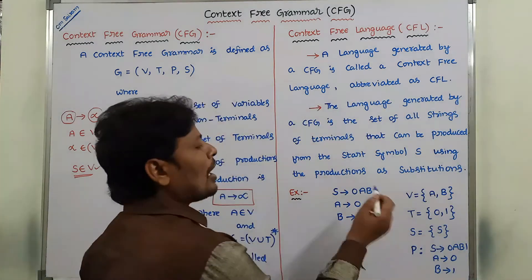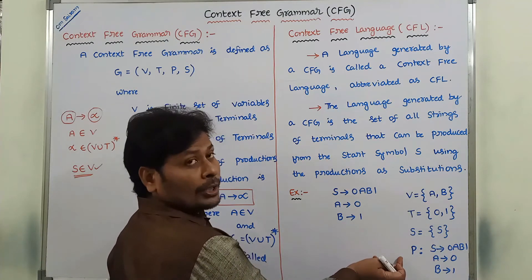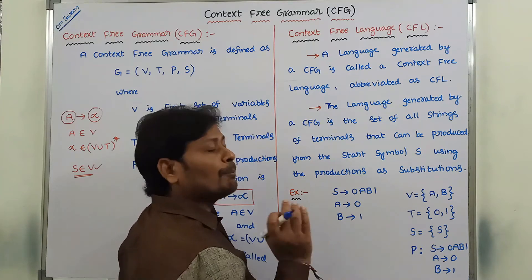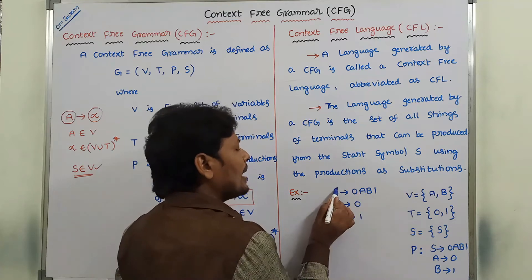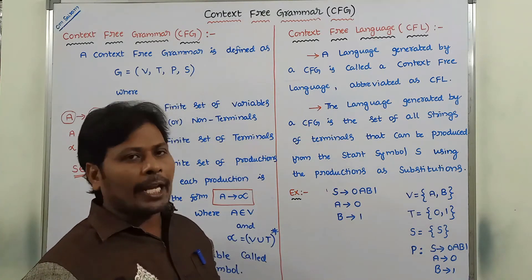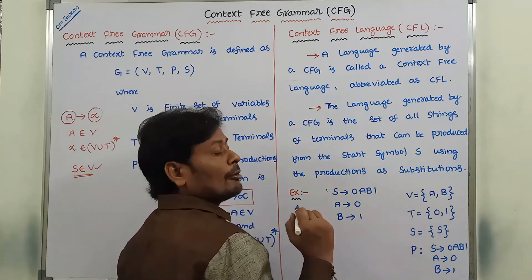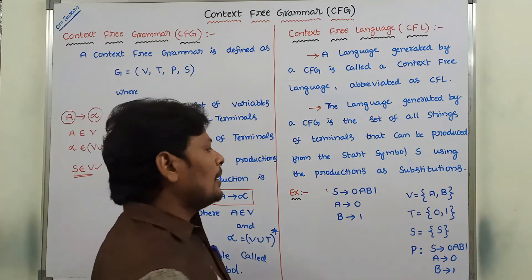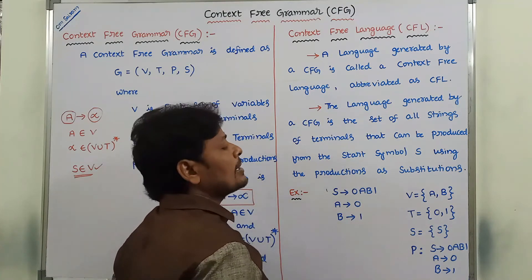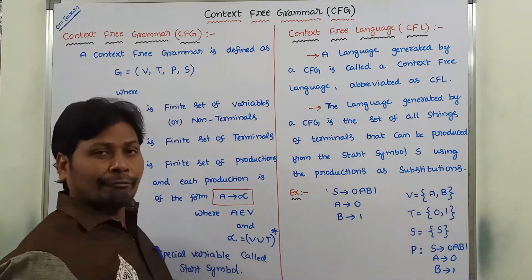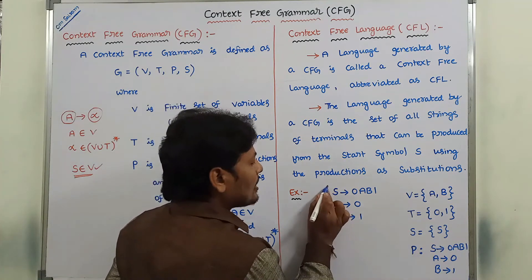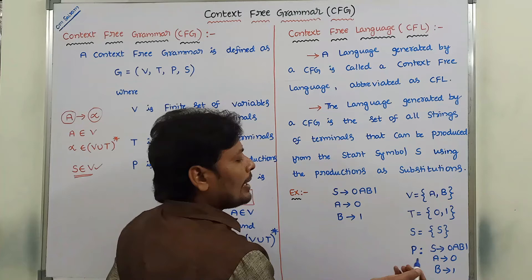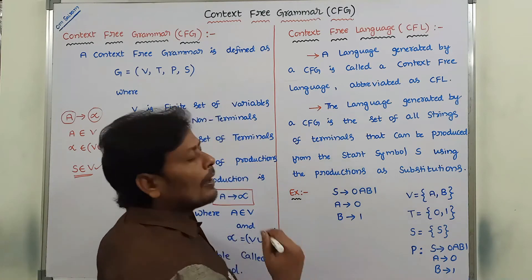Every context-free grammar can be represented using these four tuples. V is the set of non-terminals, representing uppercase alphabet symbols: A, B, and S, also called variables or non-terminals. T is the set of terminal symbols — whatever non-terminals are removed, the remaining symbols are terminals, so T equals 0 and 1. S is the start symbol, and there are three productions in this context-free grammar.